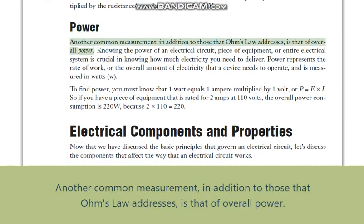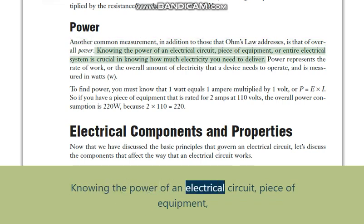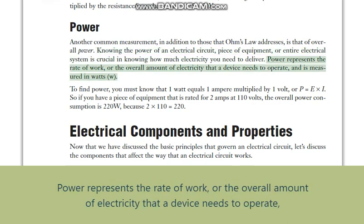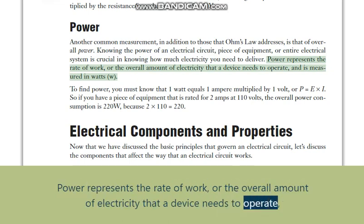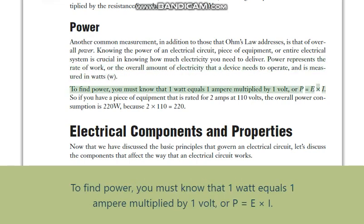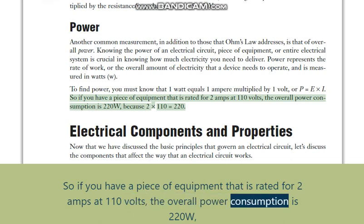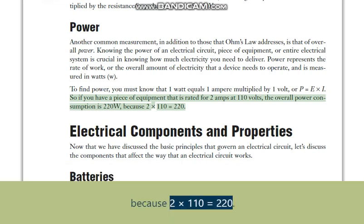Power. Another common measurement, in addition to those that Ohm's law addresses, is that of overall power. Knowing the power of an electrical circuit, piece of equipment, or entire electrical system is crucial in knowing how much electricity you need to deliver. Power represents the rate of work, or the overall amount of electricity that a device needs to operate, and is measured in Watts (W). To find power, you must know that 1W equals 1 Ampere multiplied by 1 Volt, or P equals E times I. So if you have a piece of equipment rated for 2 Amps at 110 Volts, the overall power consumption is 220W, because 2 times 110 equals 220.